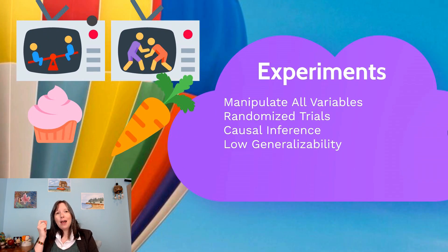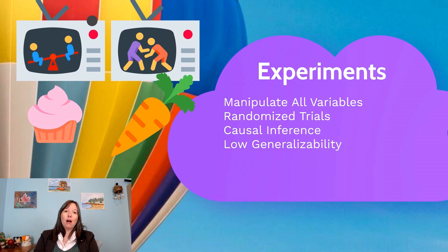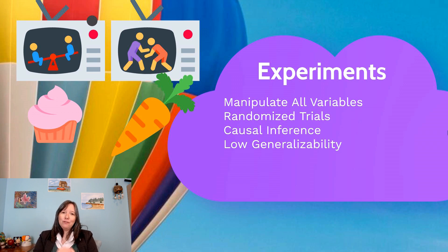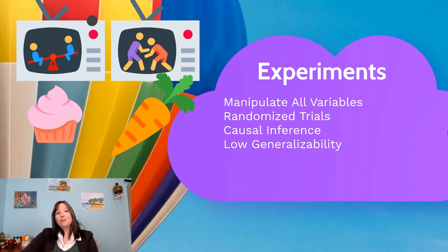In an experimental study, all independent variables are manipulated by the researchers. By manipulated, we mean that all independent variables can be chosen and randomly selected after the participants have entered the research lab. Regardless of who your participants are, you can randomly assign them to conditions, and if those conditions are all your factors of interest, then it's an experiment.